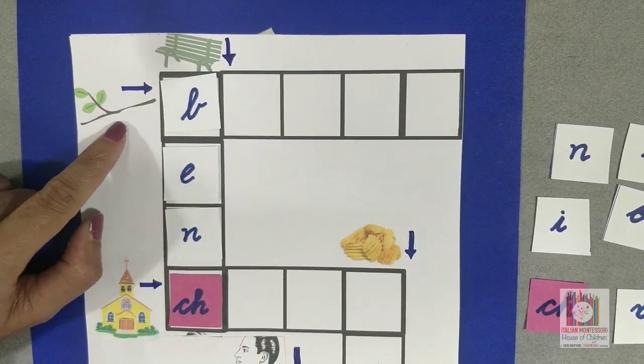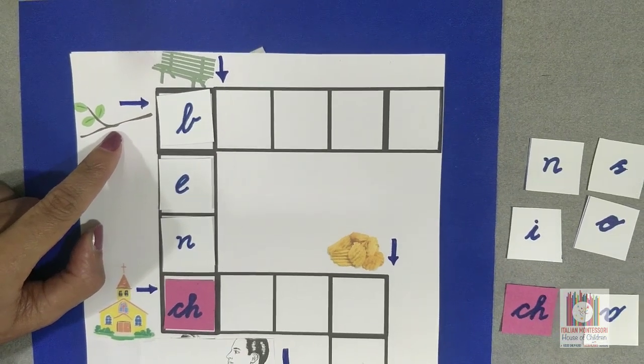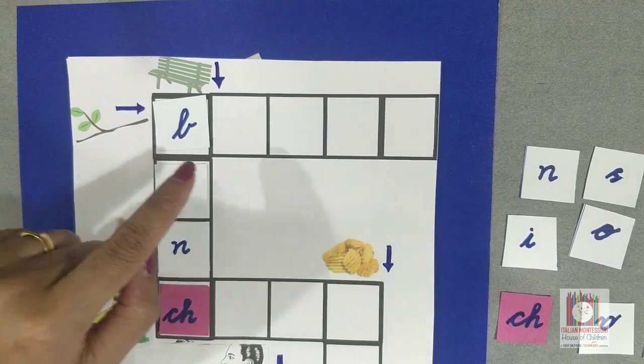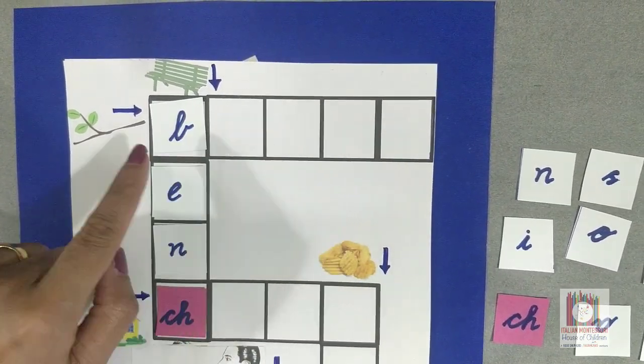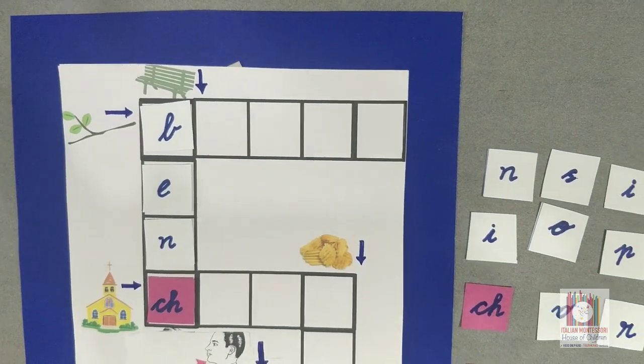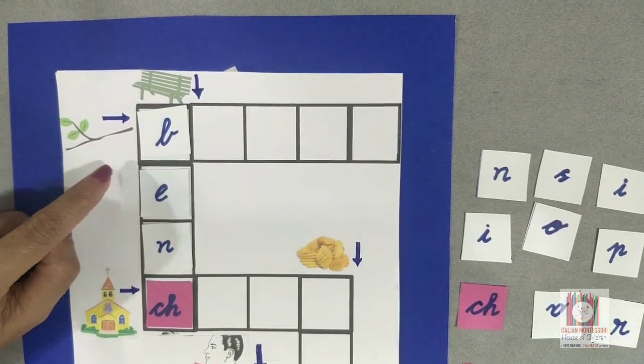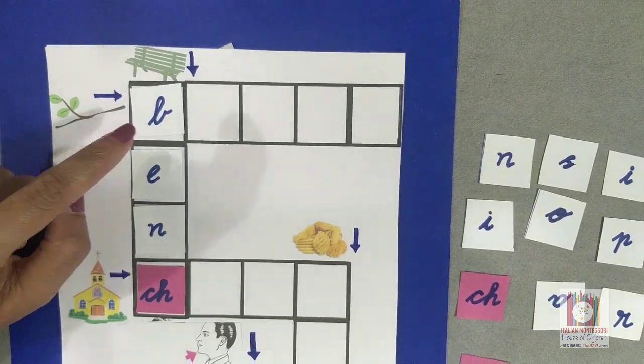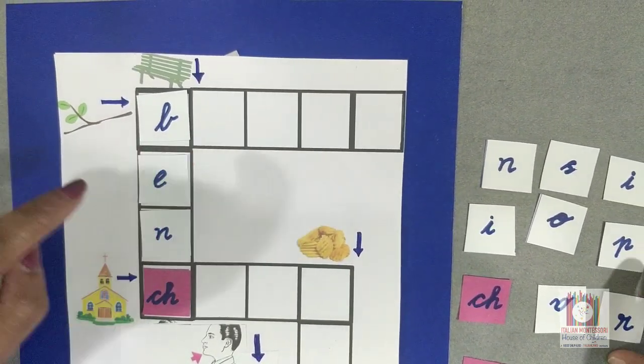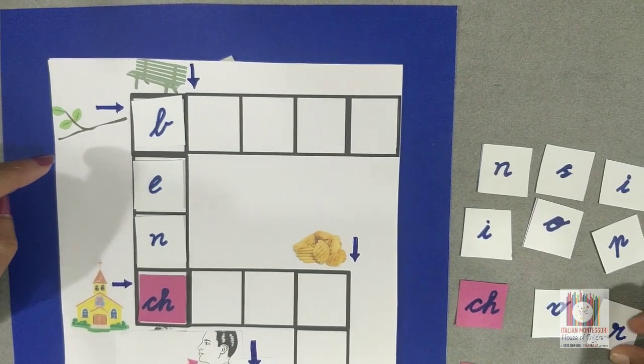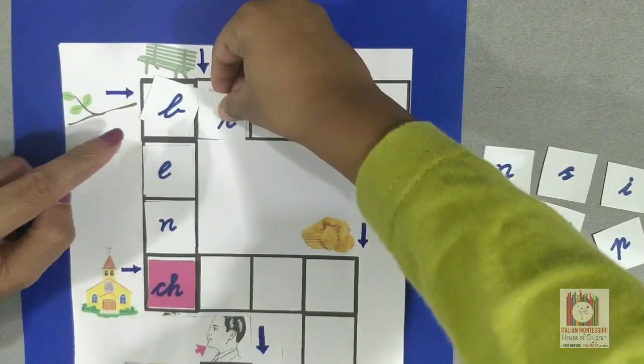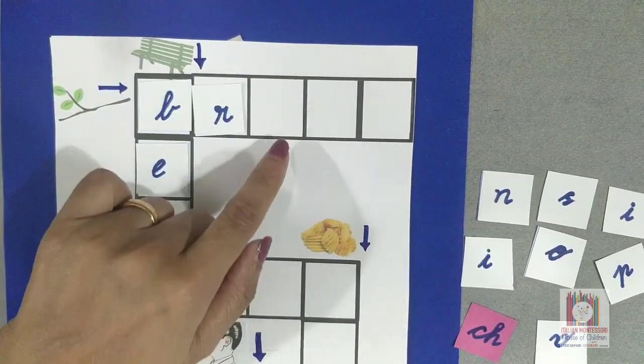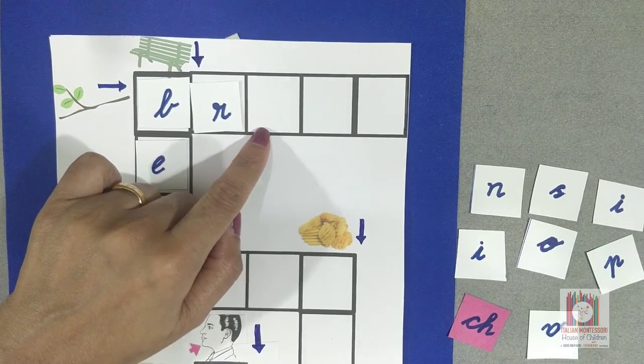Now can you tell me what picture is this? Branch. Yes. And this arrow shows rightward. We need to place the letters in these columns. Can you tell me what is the first sound when we say branch? B. Yes, it's already placed here. After B sound, what did you hear when we say branch? R. Yes, can you place it here? Branch.